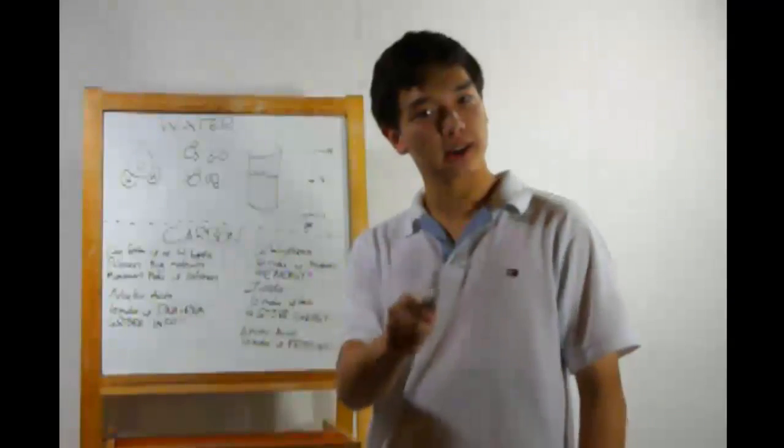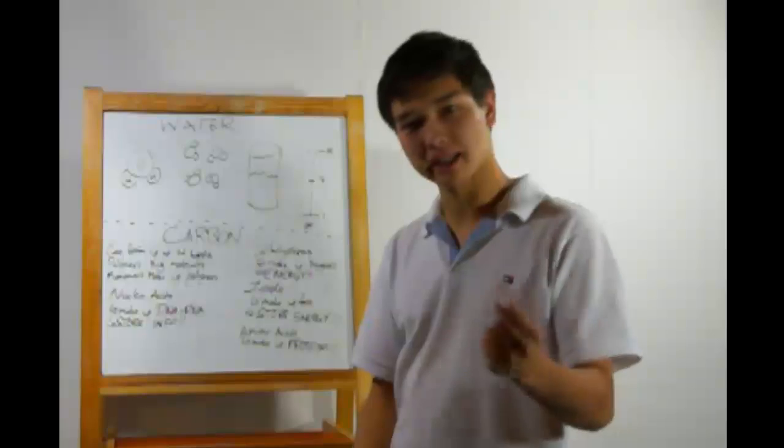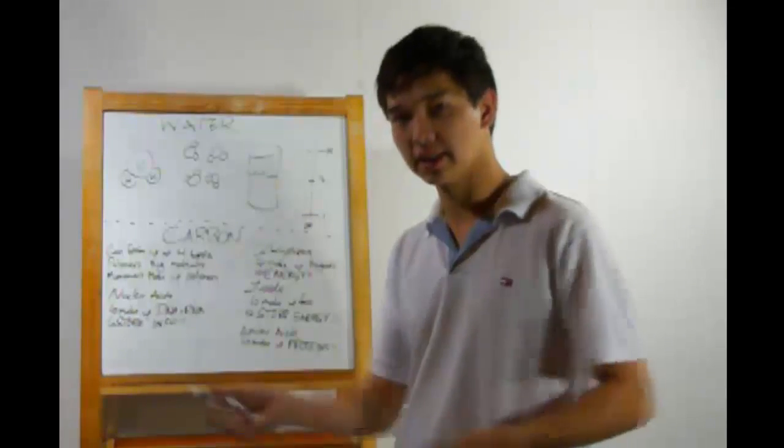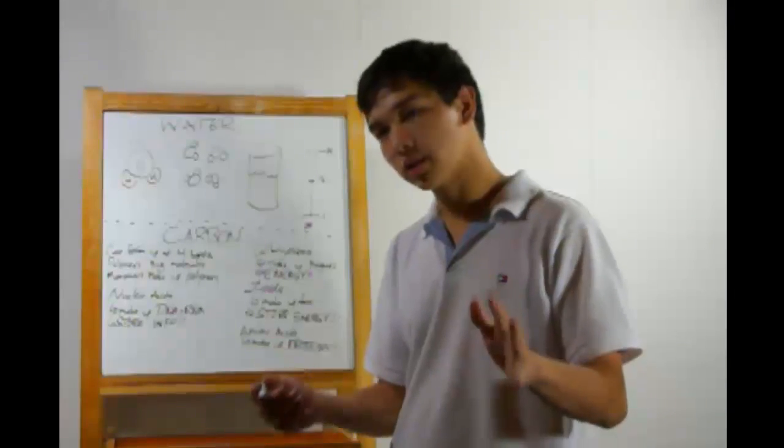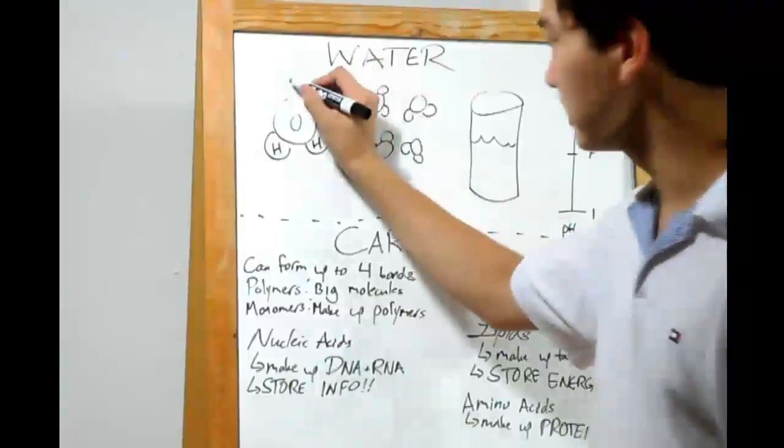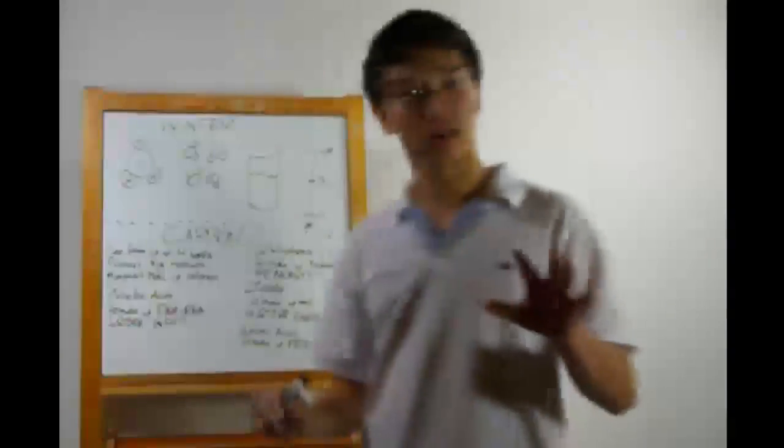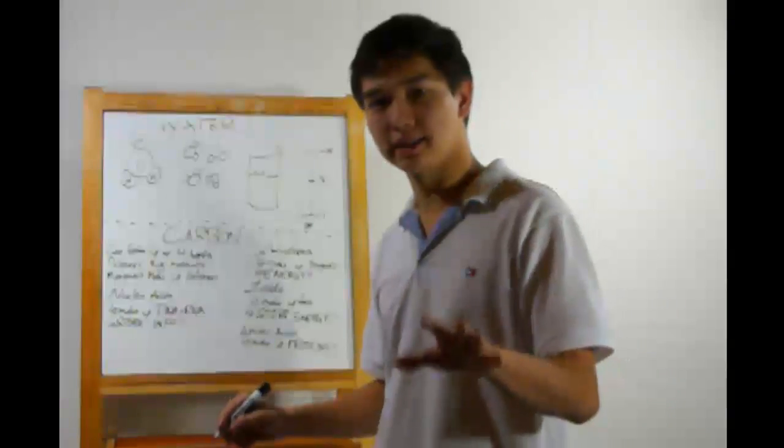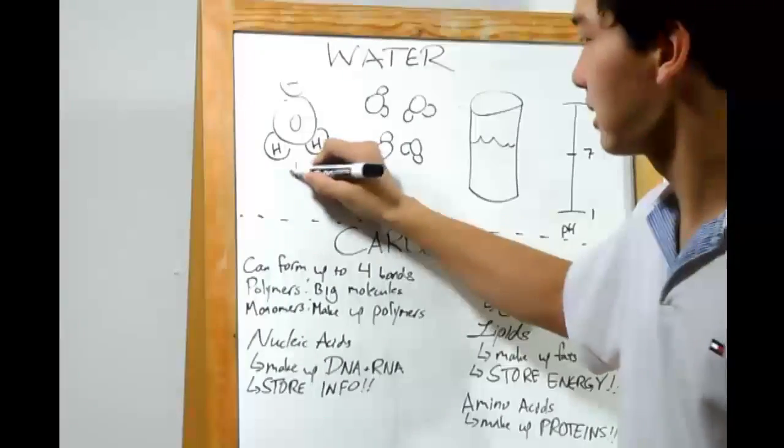As I discussed last lesson, water is a polar molecule. That means it has a positively charged end and a negatively charged end. Let me show you. Oxygen is strongly electronegative, so it has a strong pull on the electrons. That makes the oxygen end very negative. But this also leaves the positive protons on the hydrogen end exposed, so the other end is very positive.